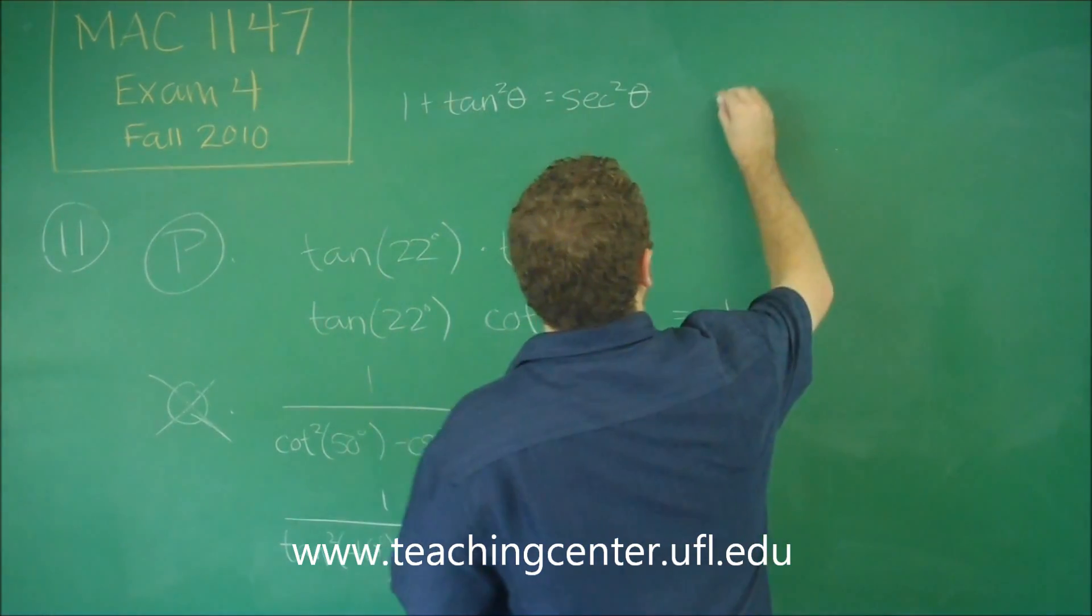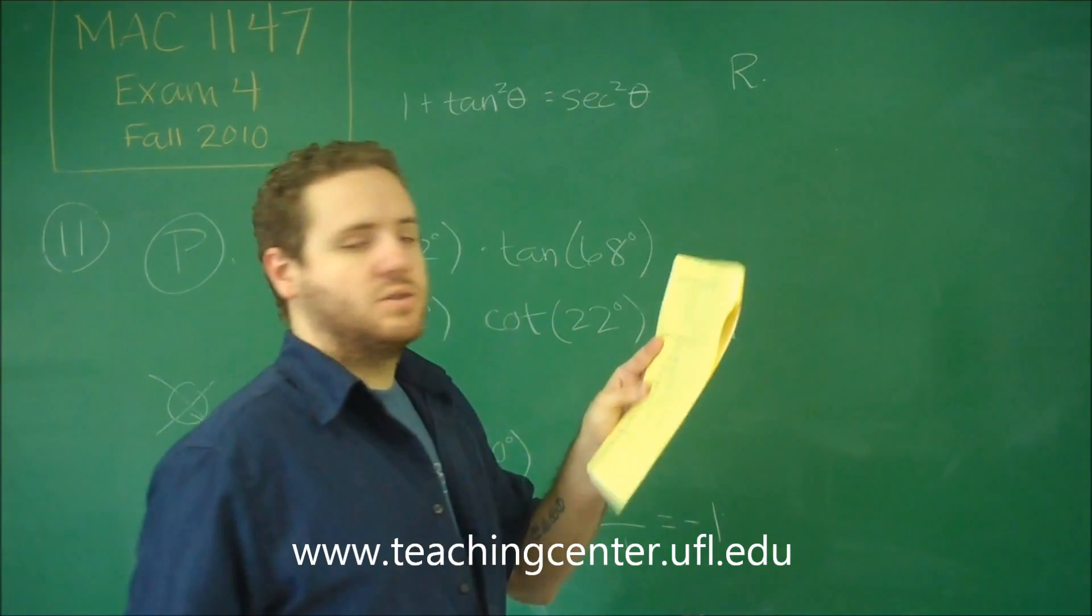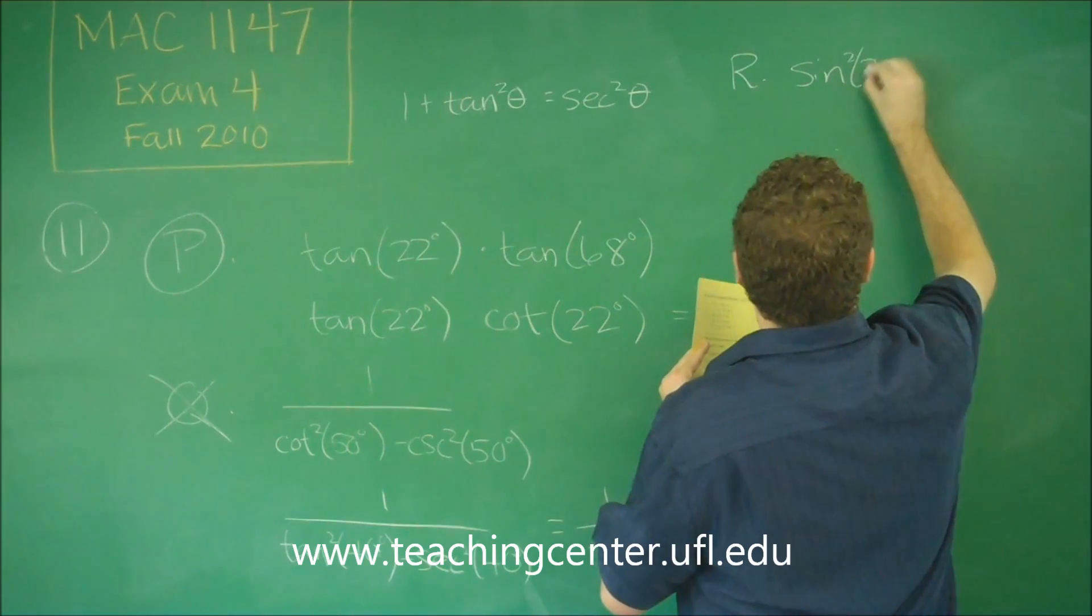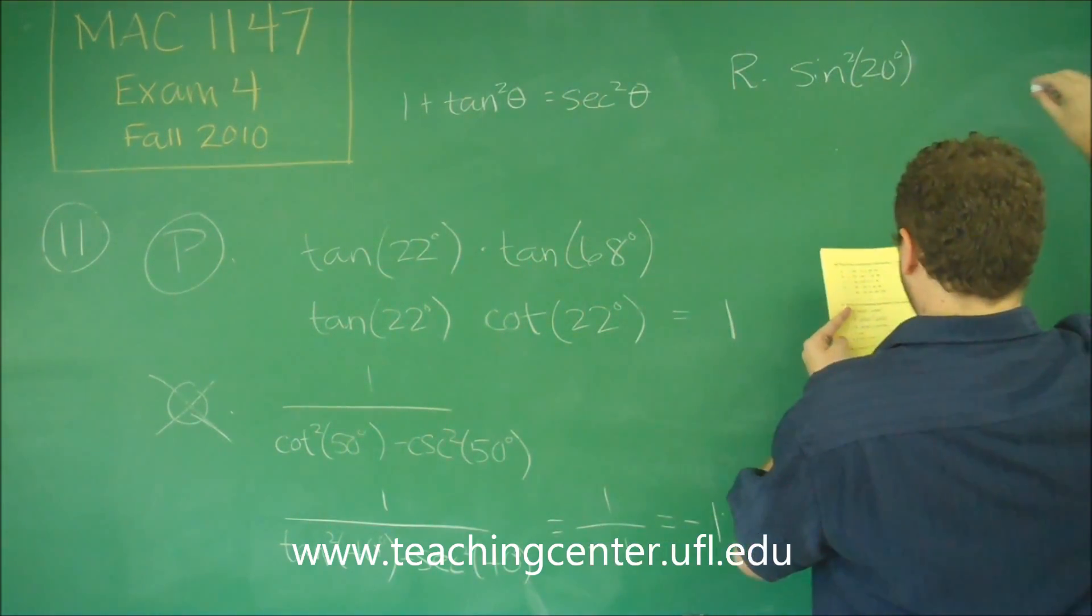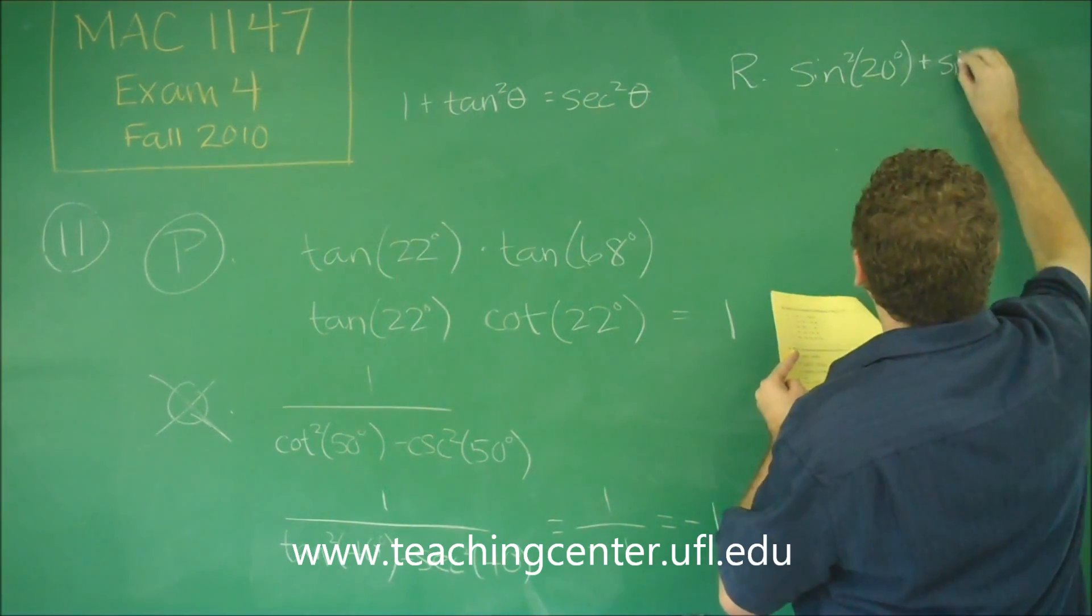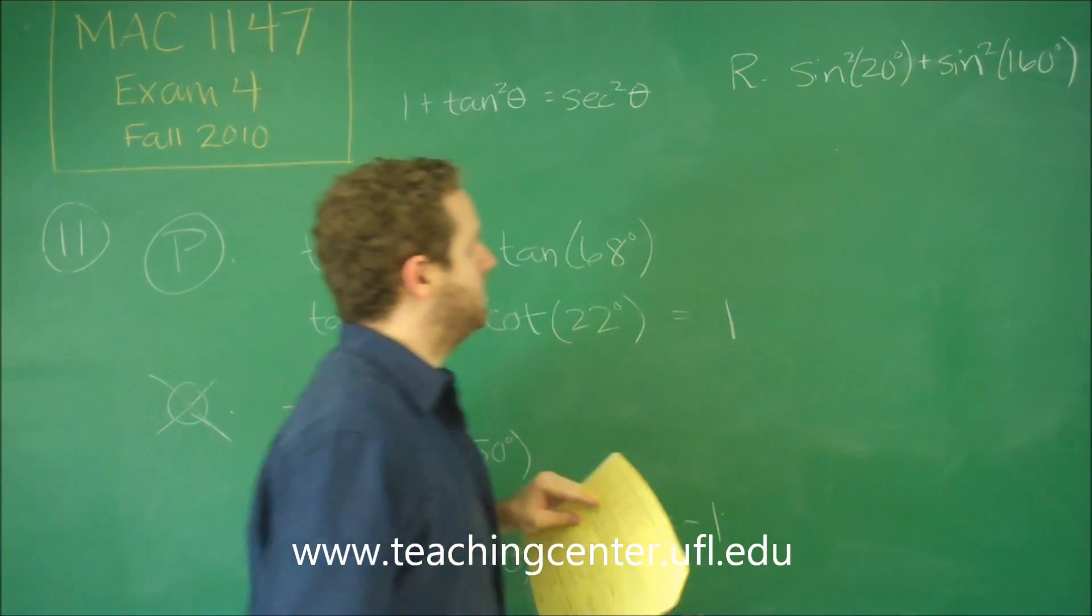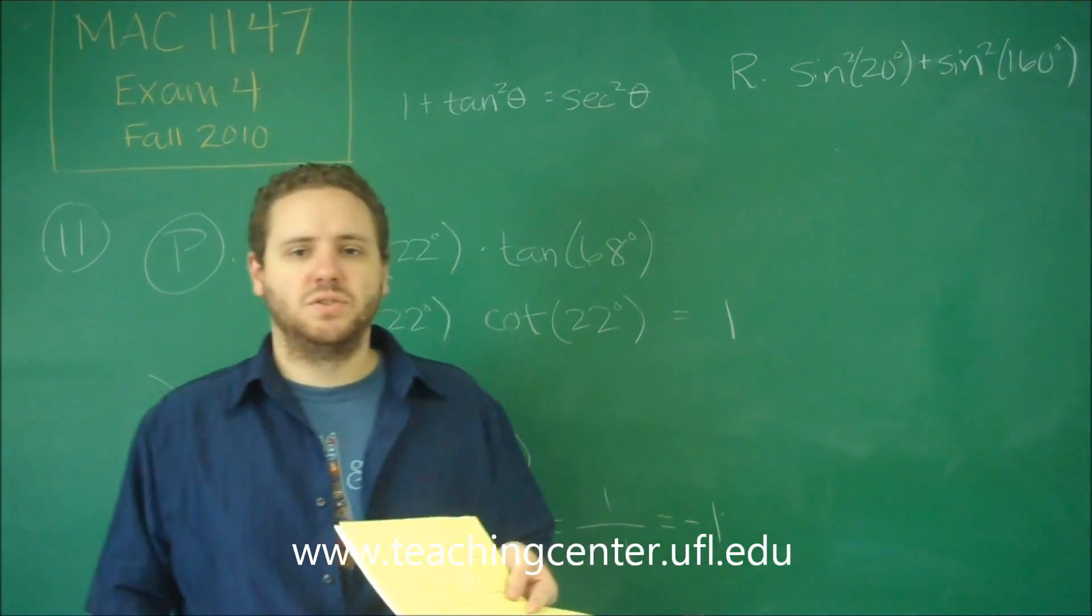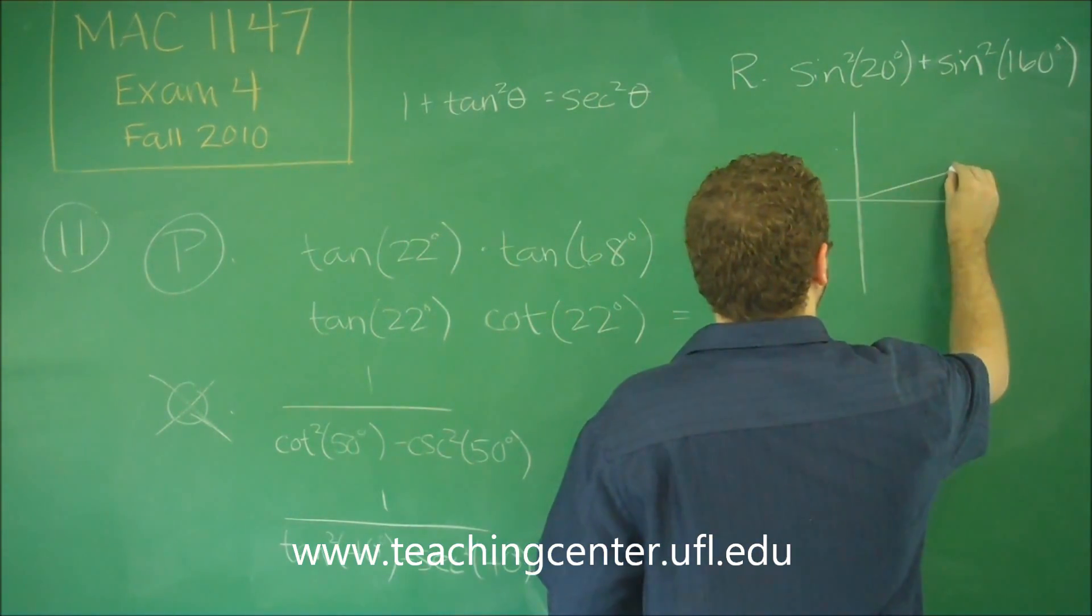So finally, statement R. Statement R says we have sine squared of 20 plus sine squared of 160. So what you need to think about here is this might even be easier to recognize just using the unit circle, because 20 degrees is some pretty low angle here.